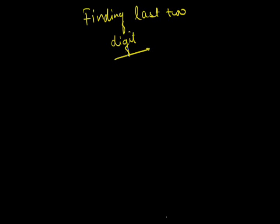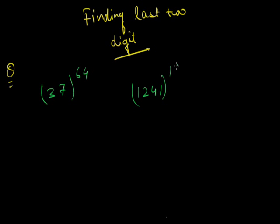In this video we will discuss finding the last two digits of a given expression. Many times we have seen problems in previous CAT examination papers that can be solved by various methods. In the next 10 minutes, I will teach you methods through which these problems can be solved within 10 seconds. We will learn two concepts that will let you easily solve this kind of problem.